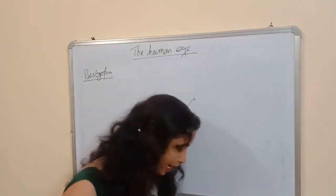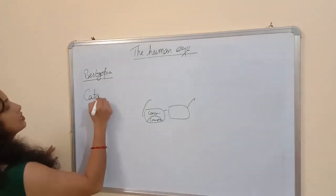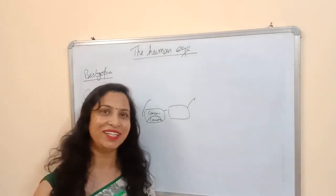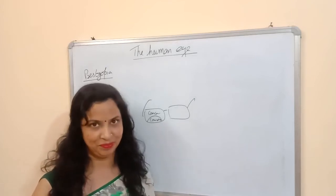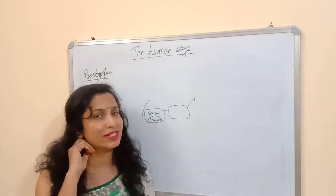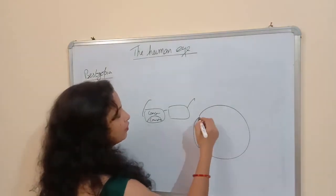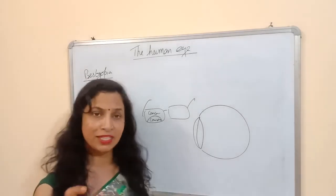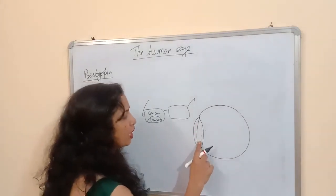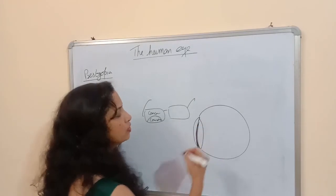The next defect of vision is cataract. You may have heard this term — motiyabind. In cataract, the lens of the eye becomes cloudy. The lens is made up of protein, and due to some arrangement of this protein or other reasons, the lens can become cloudy — a cloudy membrane forms over the lens.